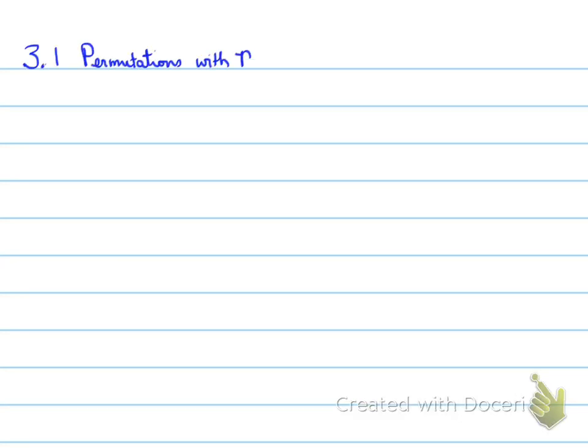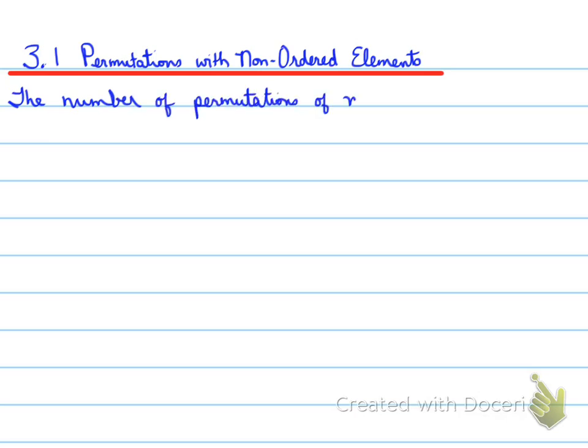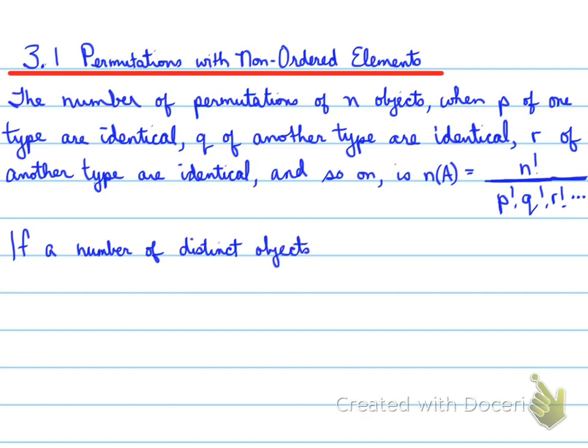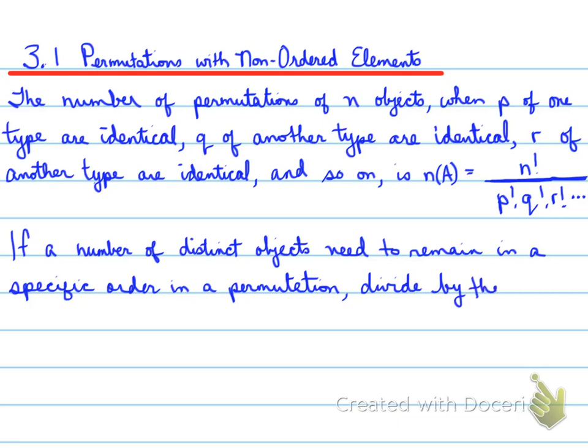Alright, 3.1, permutations with non-ordered elements. The number of permutations of n objects when p of one type are identical, q of another type are identical, r of another type are identical, and so on, is n(A) equals n factorial over p factorial times q factorial times r factorial. Now, if a number of distinct objects needs to remain in a specific order in a permutation, you divide by the factorial of that number.